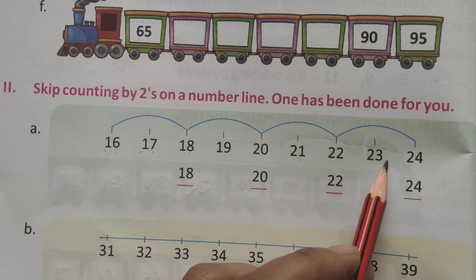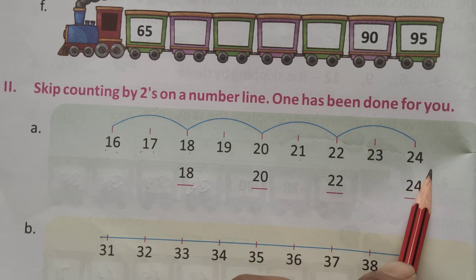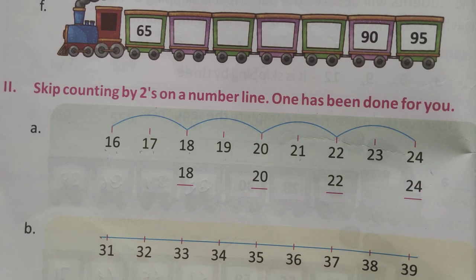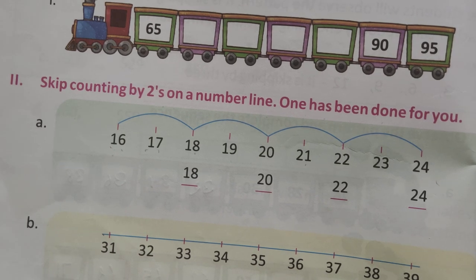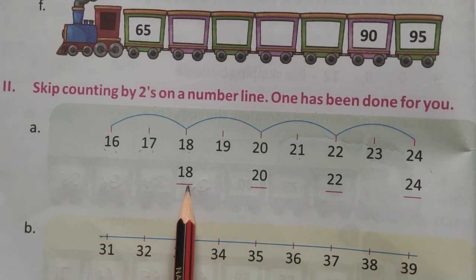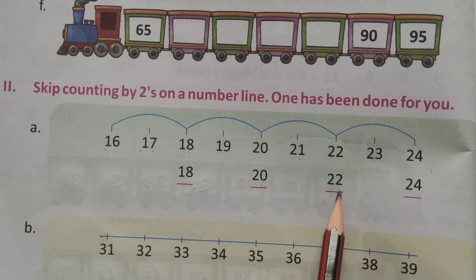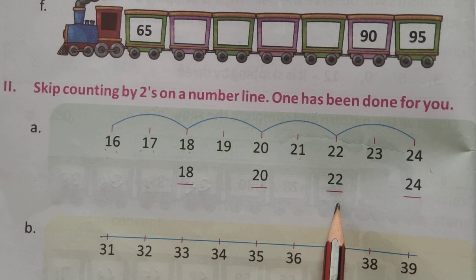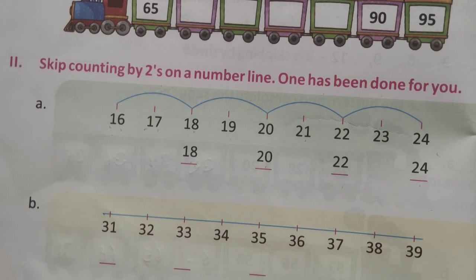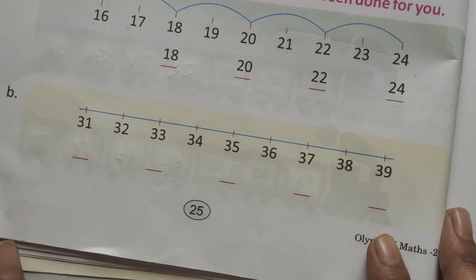22, 23, so 24. Okay? Is me skipping kya hai? 18, 20, and 22, and 24. Is that clear? My next question is,